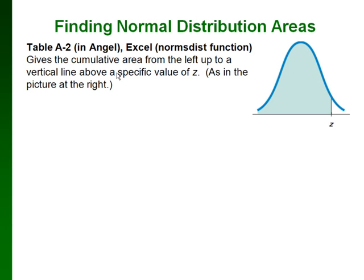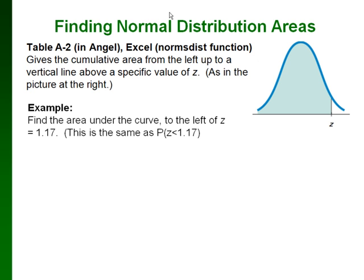The table that is out on ANGEL finds probabilities or areas this way: it takes the z value listed in the table and gives you the probability or the area from that z value to the left — so it's a cumulative distribution. This is also the same thing that you get from Excel using the NORM.S.DIST function.